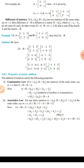Similarly, associative law. If A equal to Aij, B equal to Bij, and C equal to Cij are three matrices of the same order, then A plus (B plus C) is equal to (A plus B) plus C. The proof is already given.